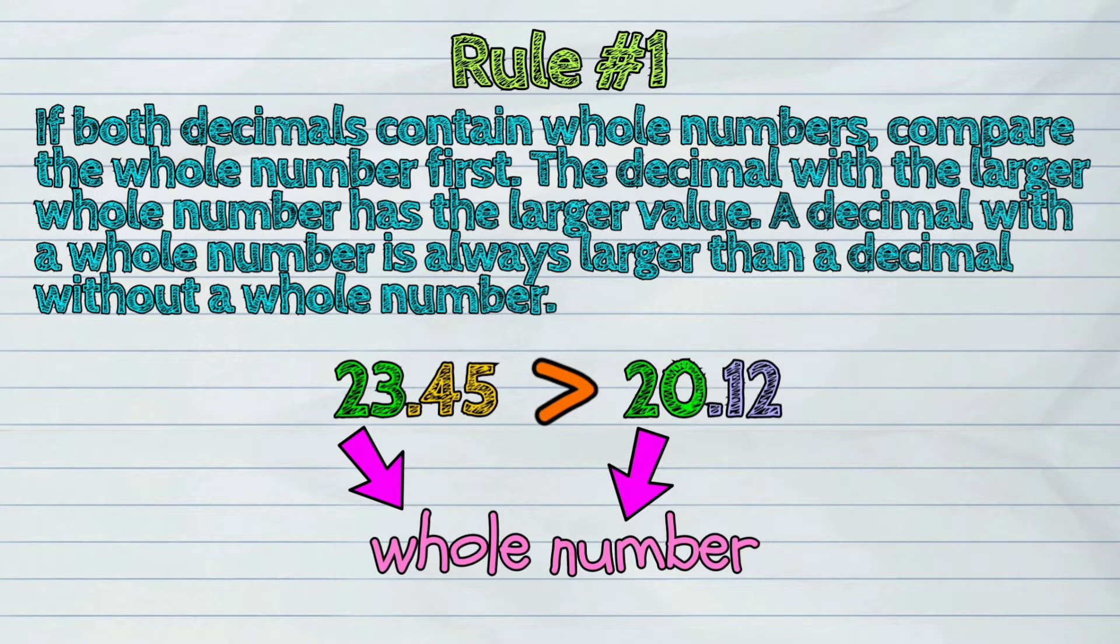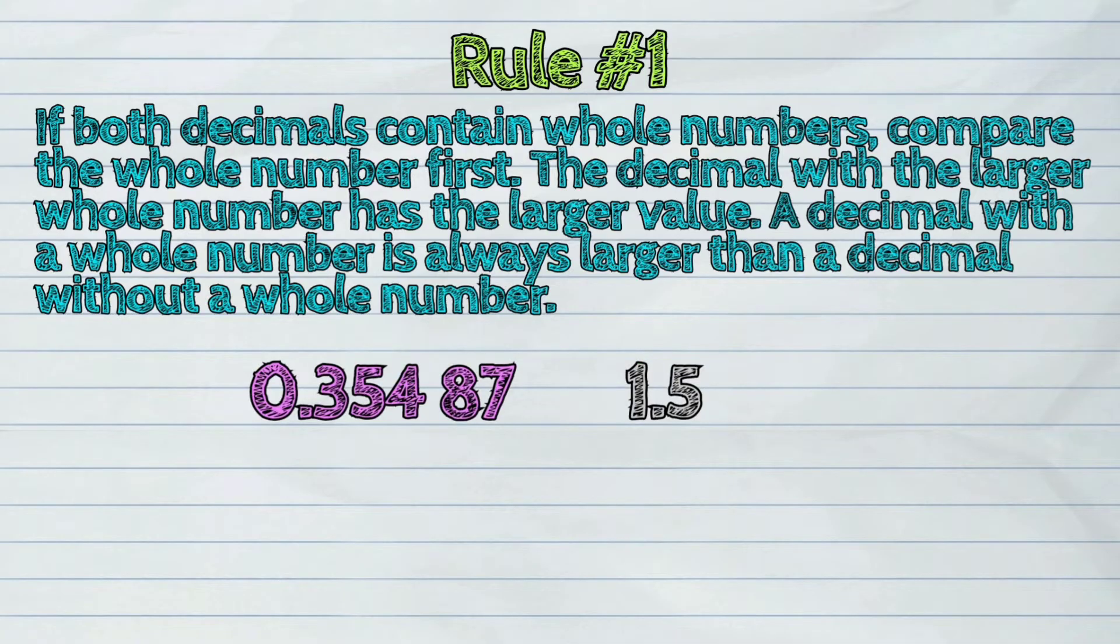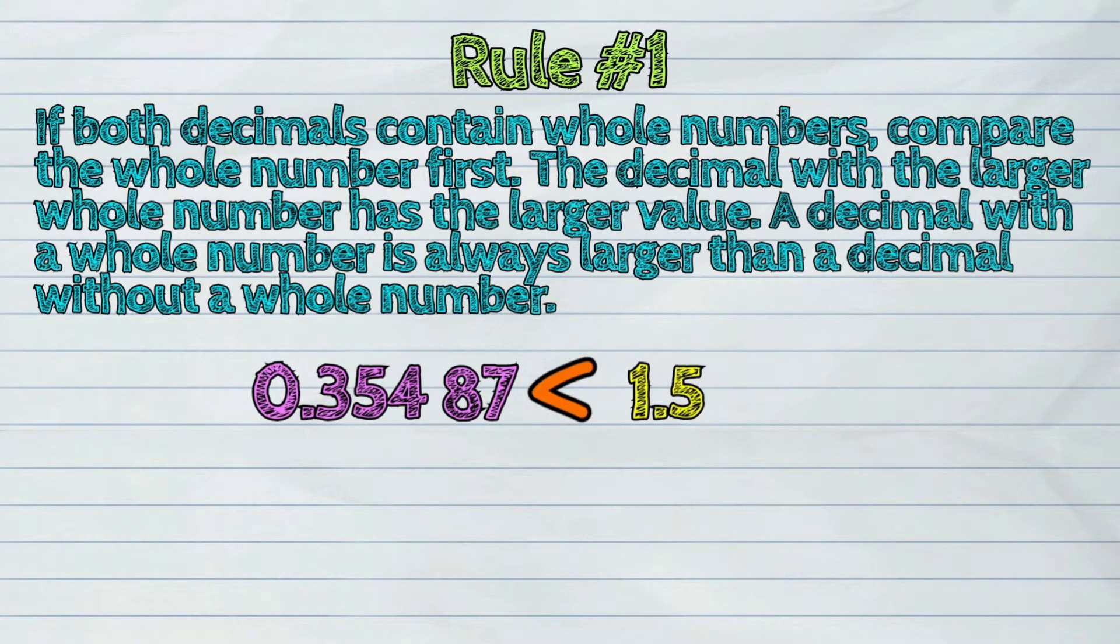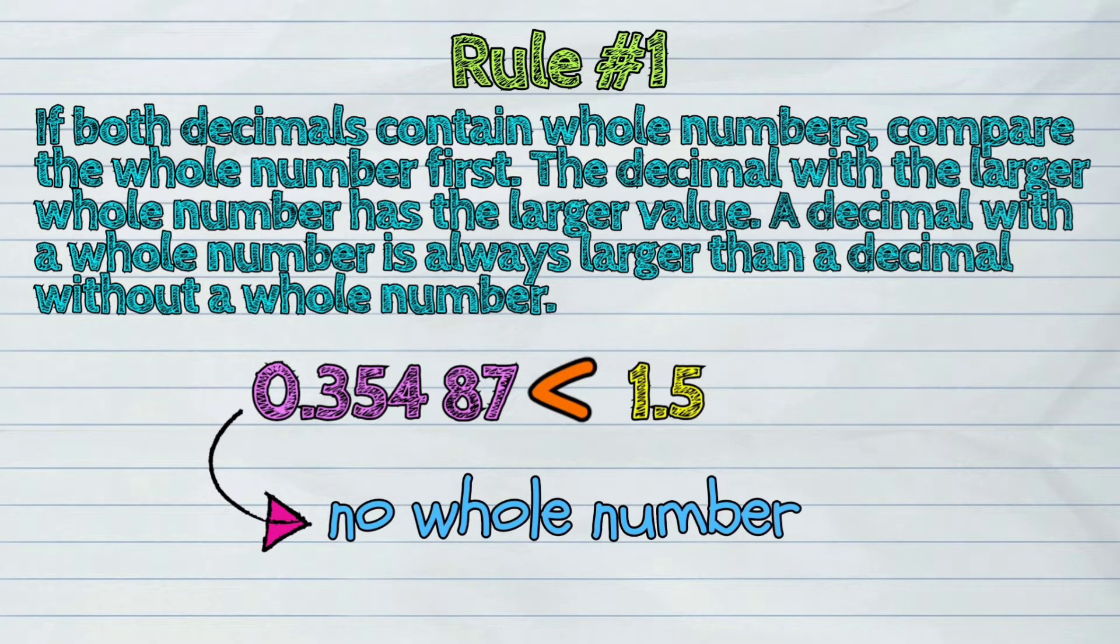Another example. 0.35487 is less than 1 and 5 tenths because it has no whole number compared to the other.